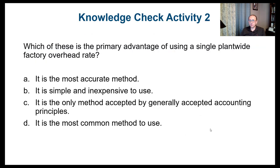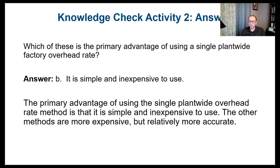Let's test our knowledge again. Which is the primary advantage of using a single plant-wide factory overhead rate? Is it the most accurate method? Is it simple and inexpensive to use? Is it the only method accepted by GAAP? Or is it the most common method? The right answer is B — it's simple and inexpensive to use. The other methods are more expensive but relatively more accurate, and we have to keep that in mind.